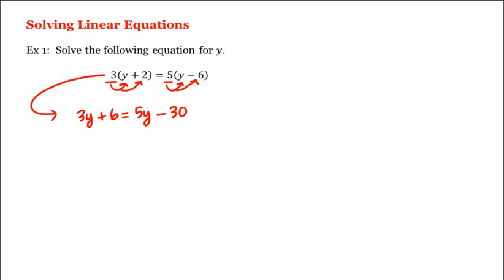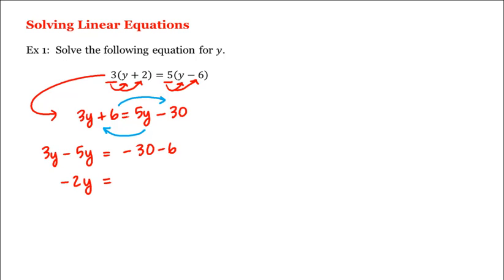Now when solving linear equations, what we want to do is bring all the variables to one side and all the numbers to the other. This gives us 3y minus 5y is equal to negative 30 minus 6, or negative 2y is equal to negative 36. Dividing both sides by negative 2 gives us our answer of y is equal to 18.